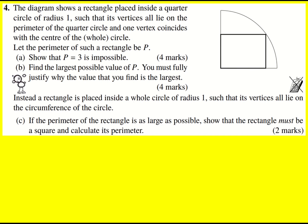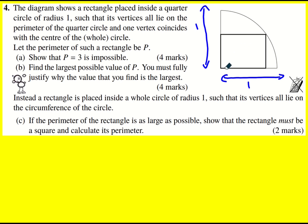We need to show that p equals 3 is impossible. We know that the full radius is 1 in both directions. We don't know anything else — we just have to show that p equals 3 is impossible. You could start trying to find the perimeter of the whole quarter circle, but that doesn't really help.